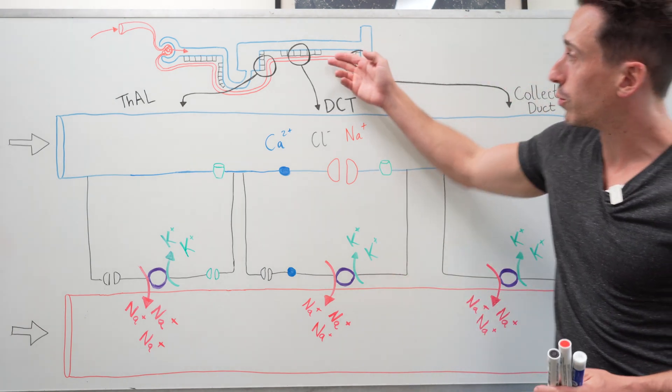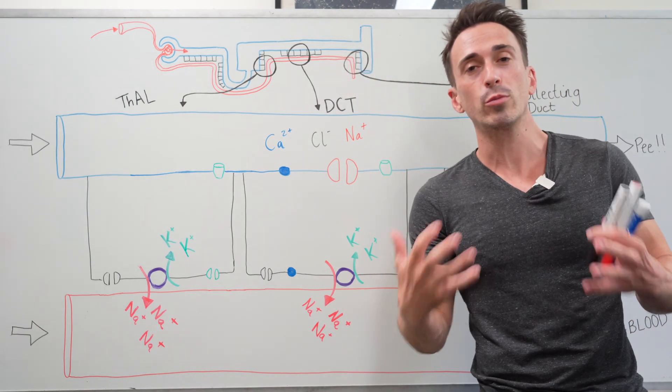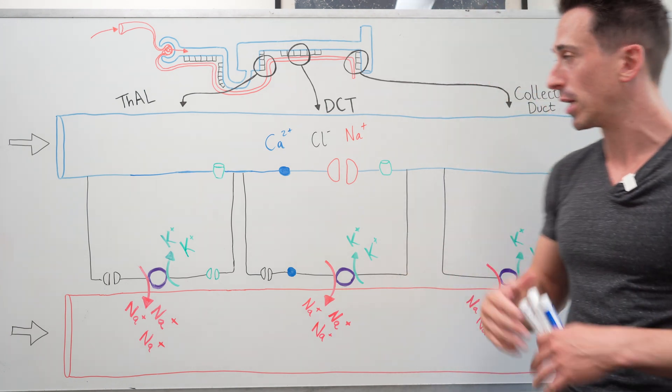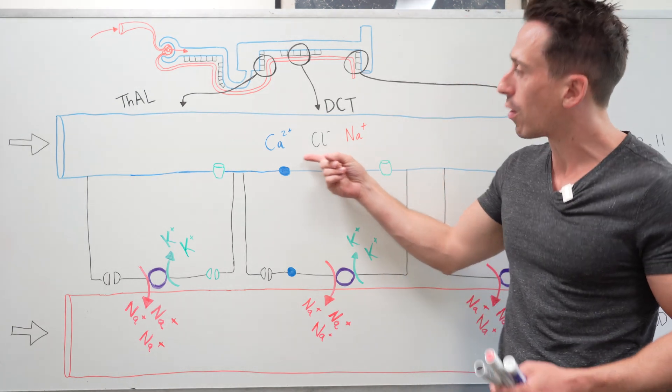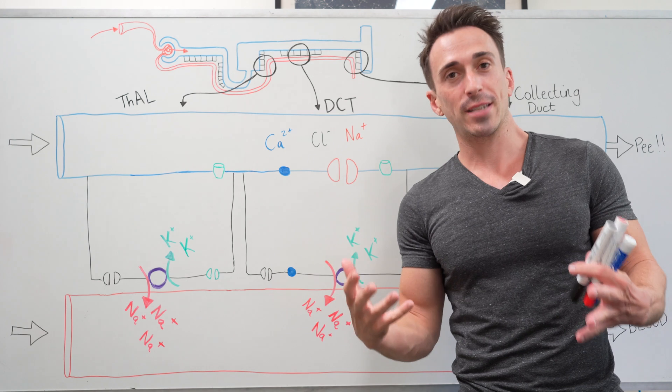The cells of the distal convoluted tubule play a really important role in reabsorbing certain ions back into the body, ions such as sodium, chloride and calcium. How does this work?